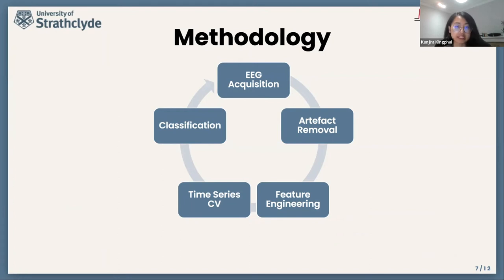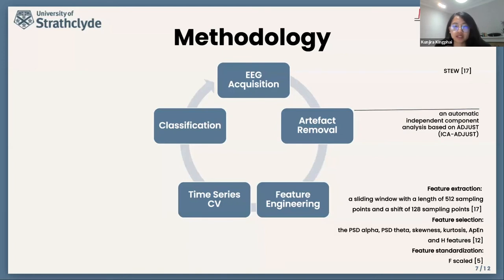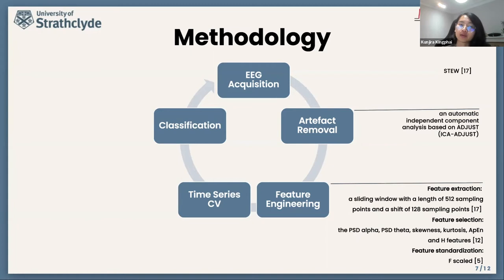Methods for our study include EEG acquisition, artifact removal, feature engineering, model training, and classification. A publicly available dataset called STILI was used. We removed undesired signals using automatic independent component analysis based on ADJUST. Then, relevant EEG signal characteristics were captured in the feature extraction step. We applied a sliding window with a size of 4 seconds and a step of 1 second. Based on intensive usage in previous studies, we selected PSD alpha, PSD theta, skewness, kurtosis, approximate entropy, and Hurst features as the optimized feature set for the STILI dataset. Additionally, we performed feature standardization before further analysis using feature scaling.